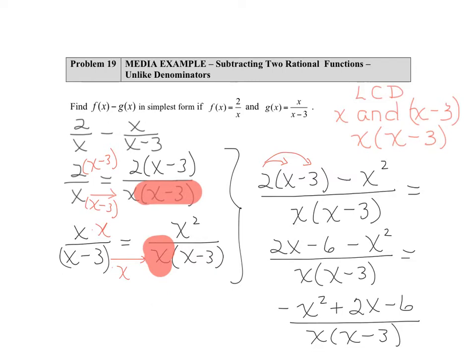And there are no factors that multiply to negative 6 and add or subtract to a positive 2. So this problem does not factor and therefore the fraction is in simplest form.